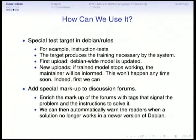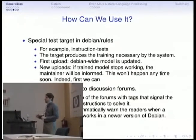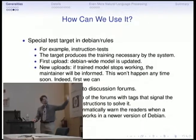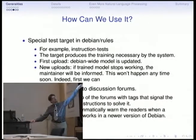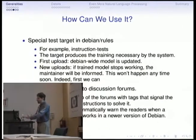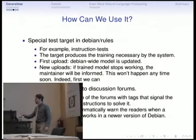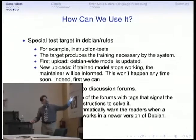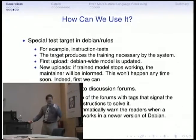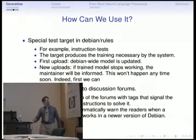One possibility would be to have a target in debian/rules that lets you register these instructions — you say there are these instructions within this package that achieve certain things. Then at the beginning the system trains itself and says okay, now I know how to execute this. But then when a new upload comes, it says these instructions no longer work, and it will notify the maintainer. We were discussing this with Mark and Maxson last night and they said maintainers will never write this.